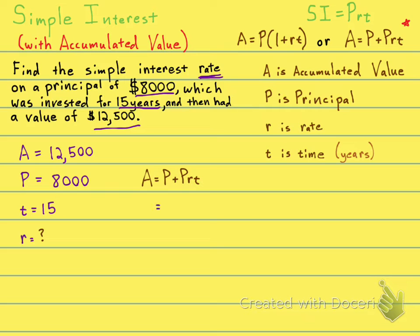So, A equals, A is 12,500. P, which is your 8,000, plus PRT. So, that is 8,000, plus the P, times R, which we don't know, and I'm just going to leave that as the letter R, times T, which is 15.